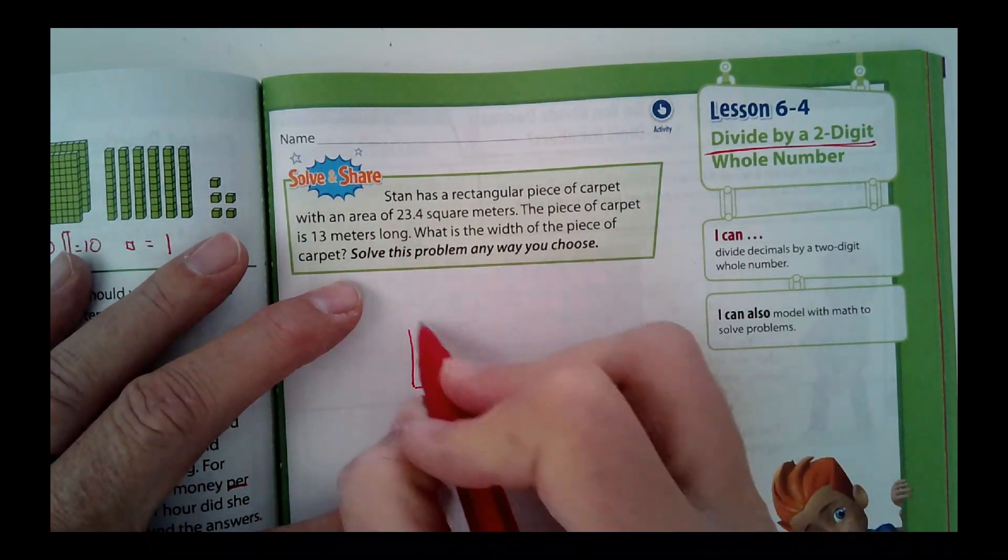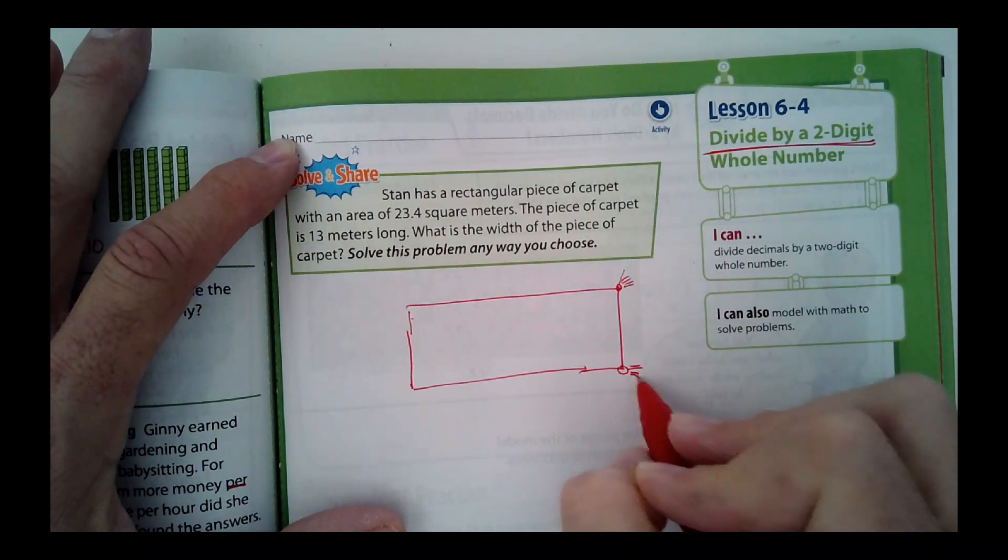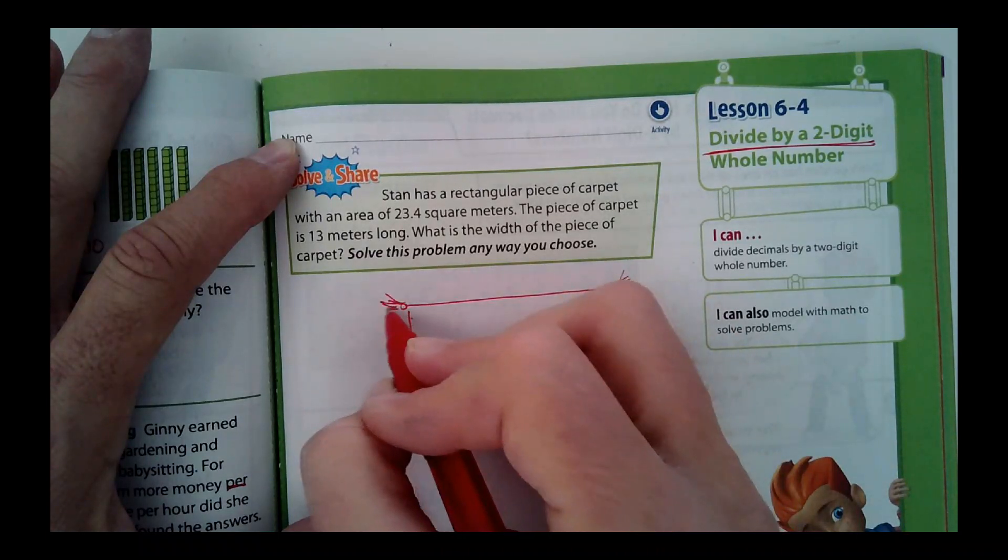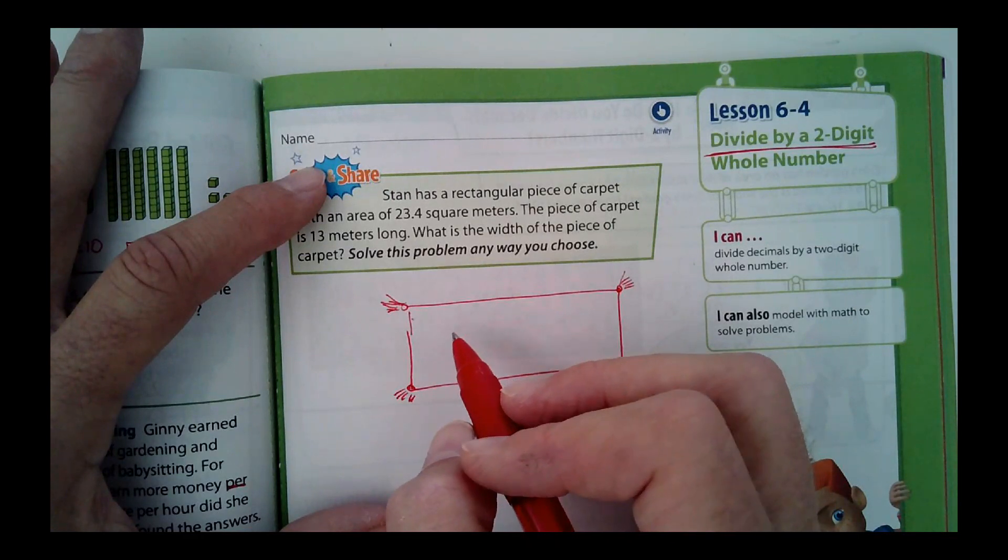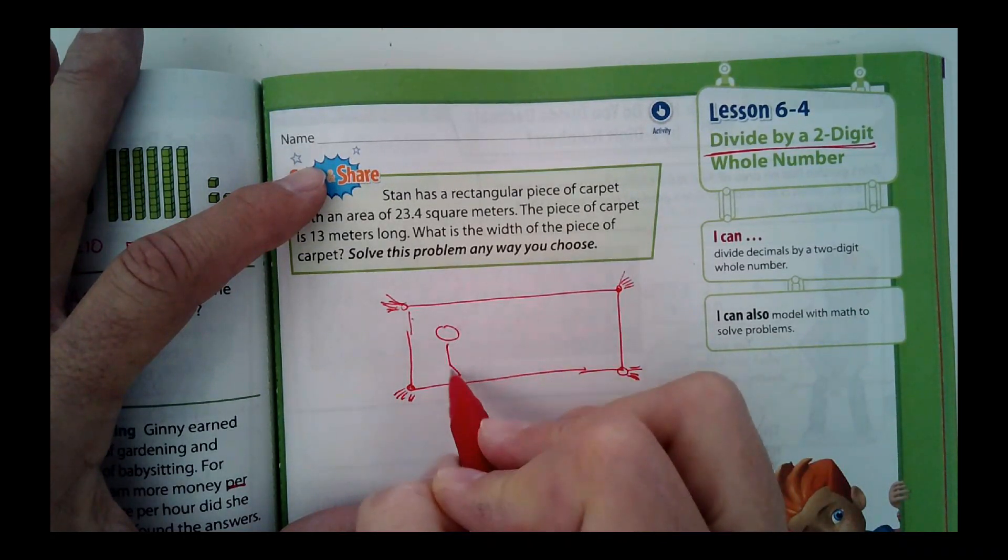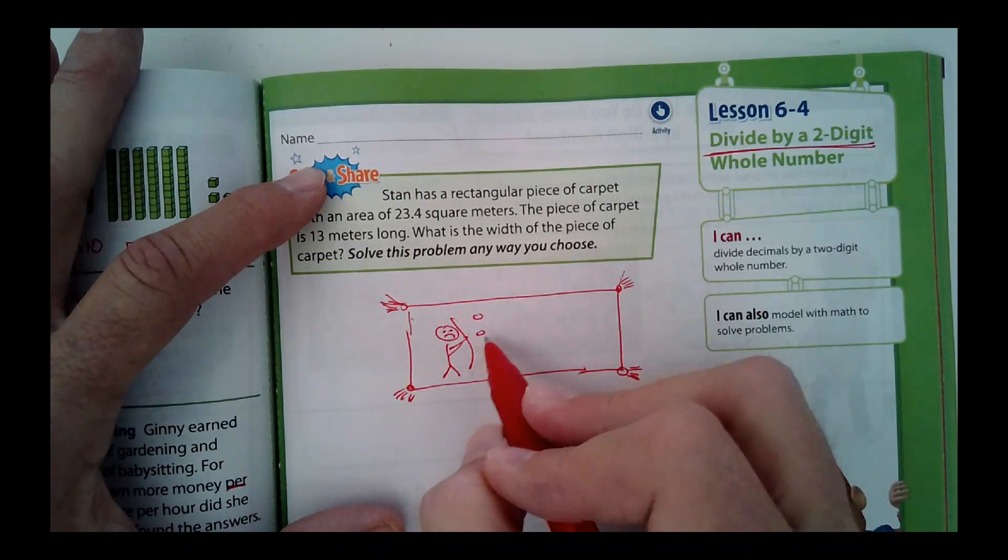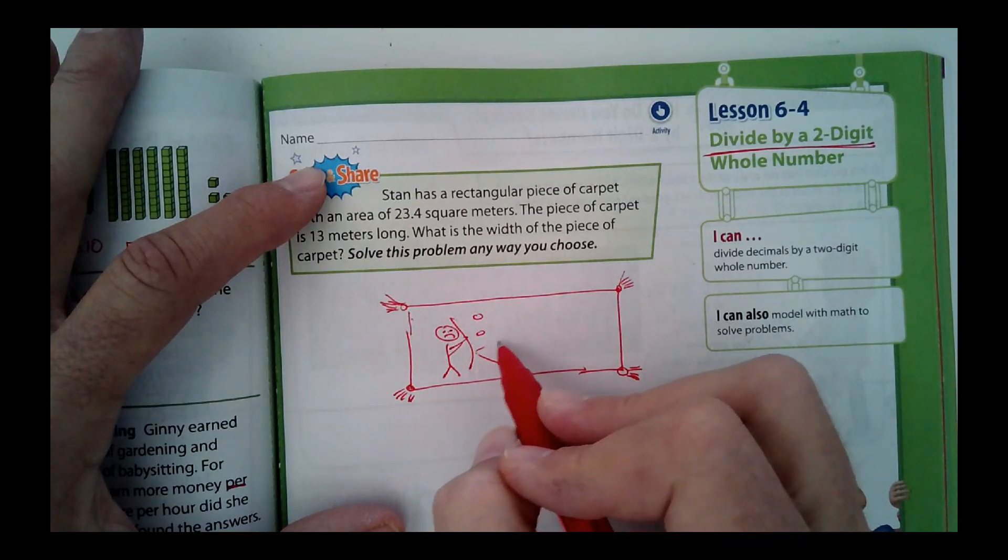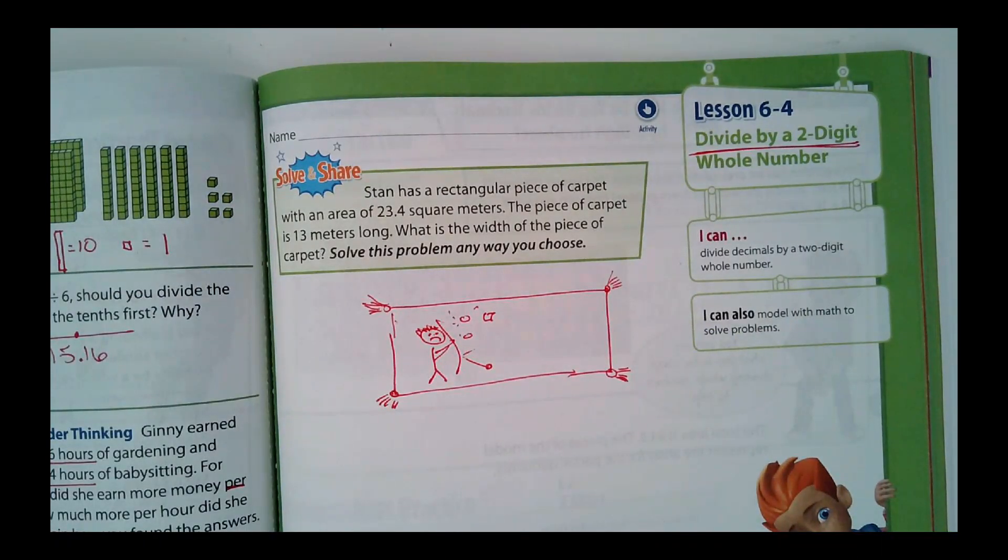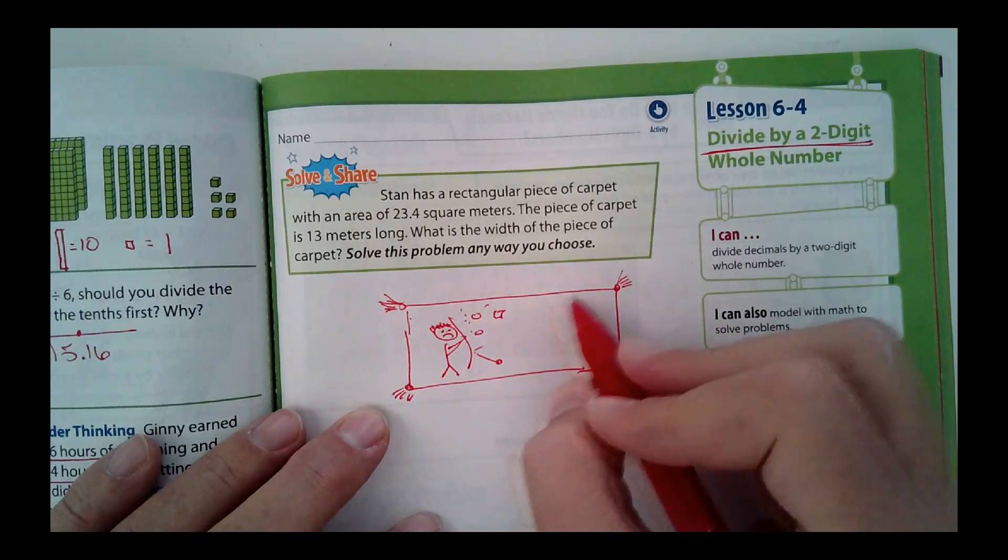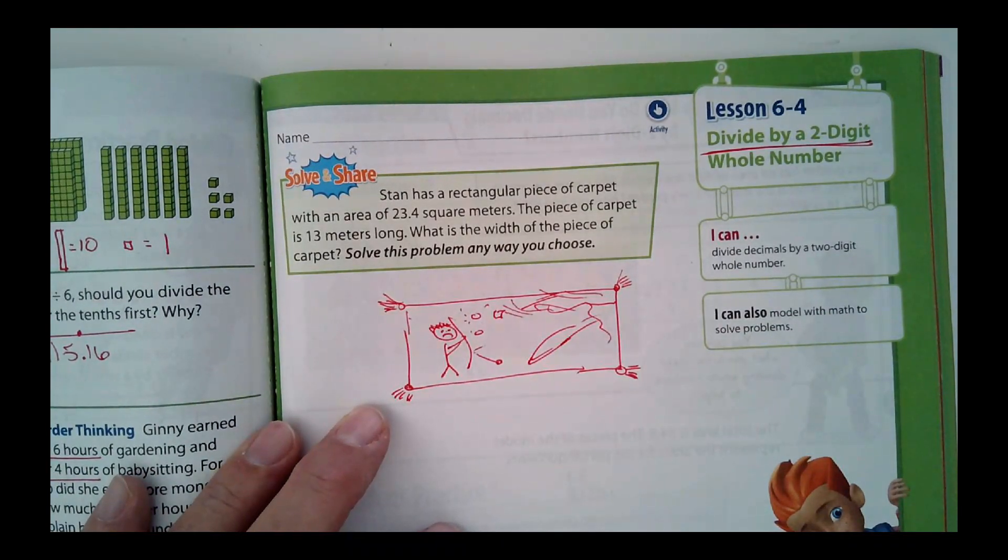It says Stan has a rectangular piece of carpet. Here's the carpet that Stan has, and it's got little tassels on each end. And embroidered in the carpet is Mr. Gonzalez. Okay, here's Mr. Gonzalez. And he's holding up a shield because rocks and debris are bouncing off here. Let me get his hair. There we go.